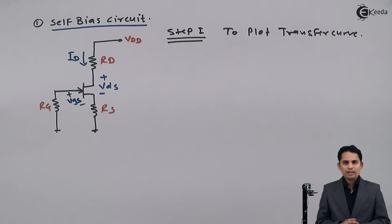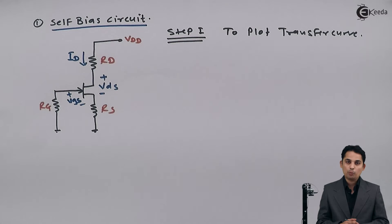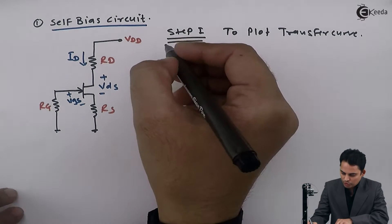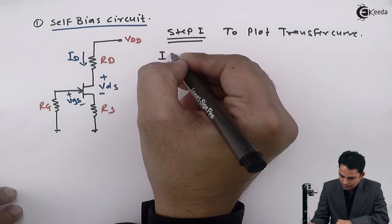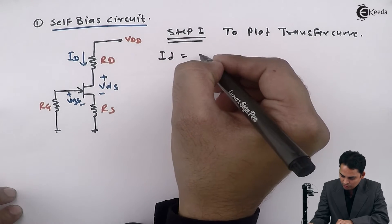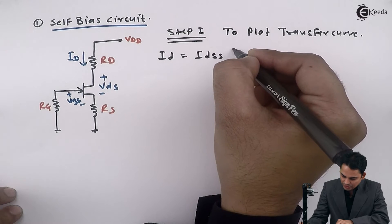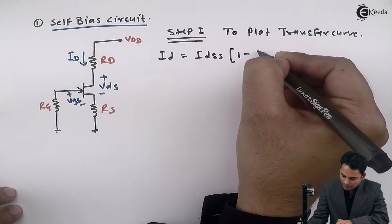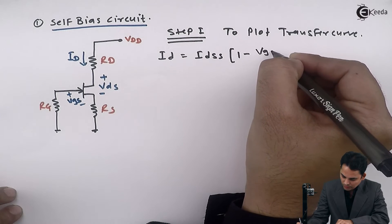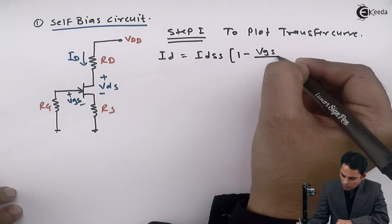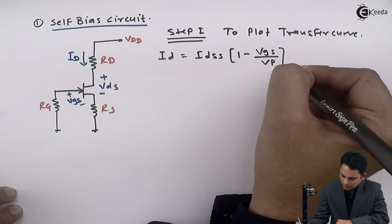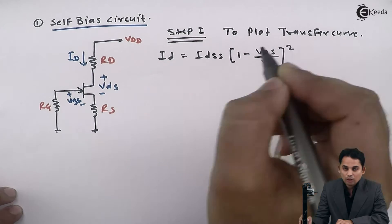For that we have the equation: Id is equal to Idss into bracket 1 minus Vgs upon Vp, the whole square.